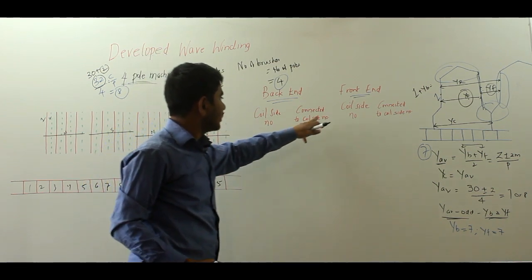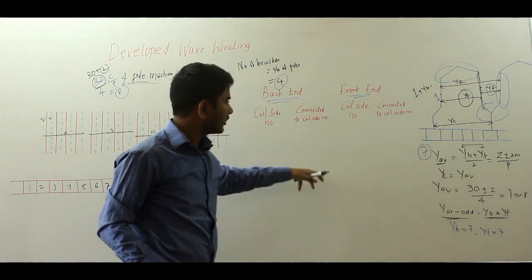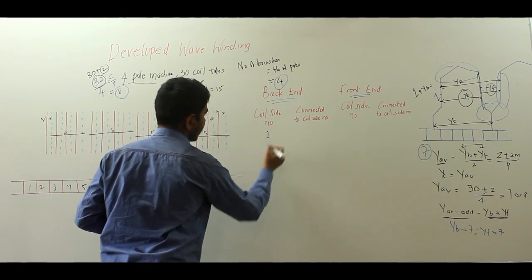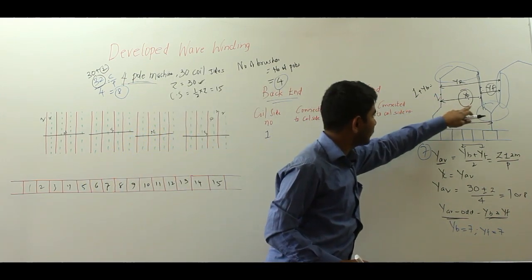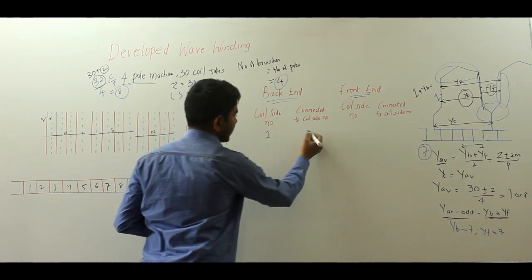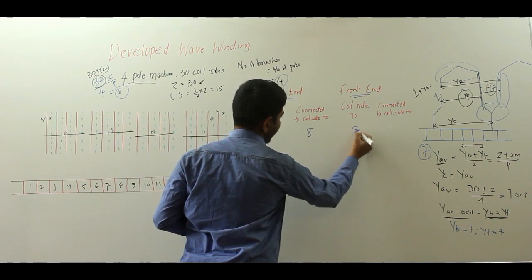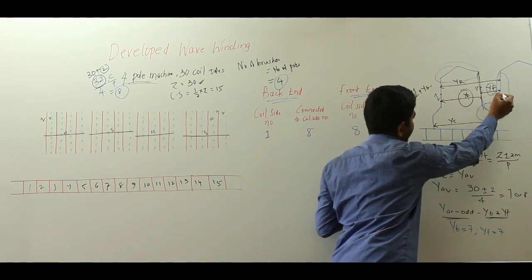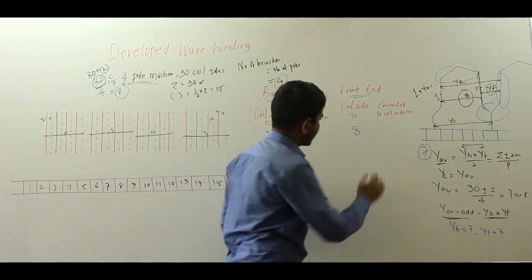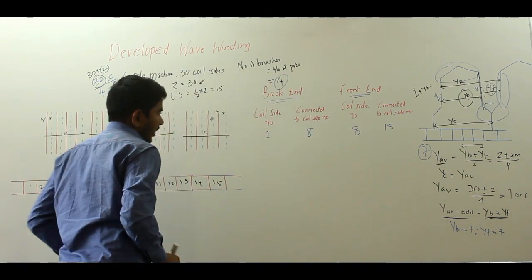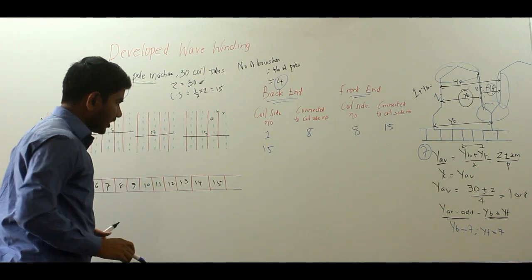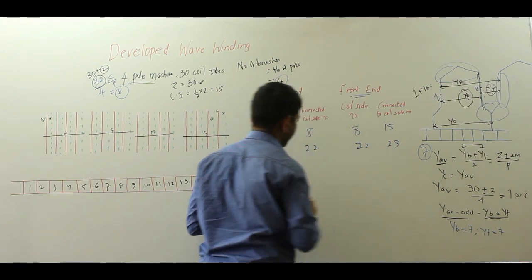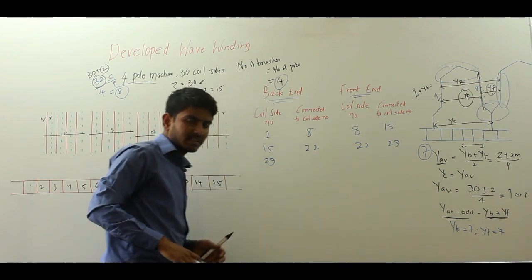Let us tabulate the back-end and front-end connections. Coil side 1 connects to 1 + 7 = 8 at the back end. Coil side 8 connects to 8 + 7 = 15 at the front end. Then 15 + 7 = 22, 22 + 7 = 29, and 29 + 7 = 36.